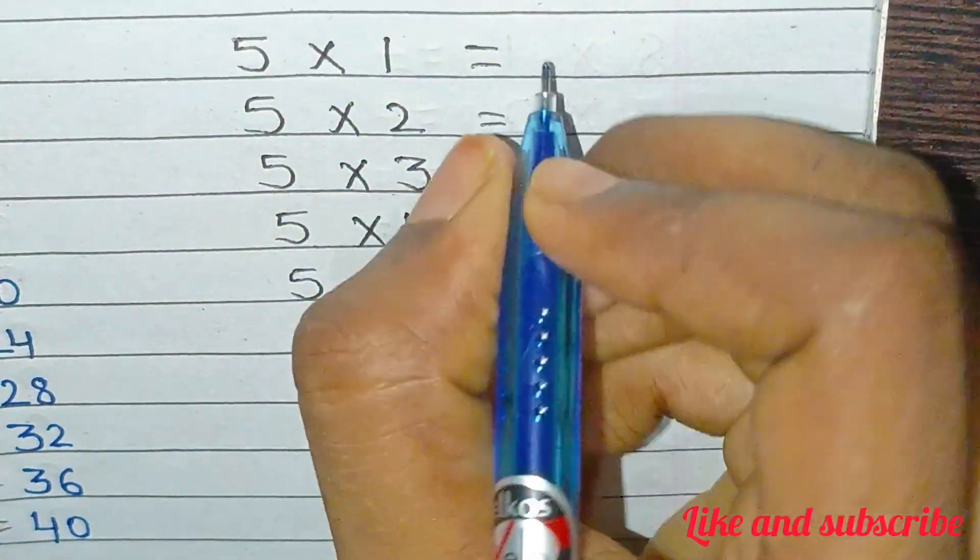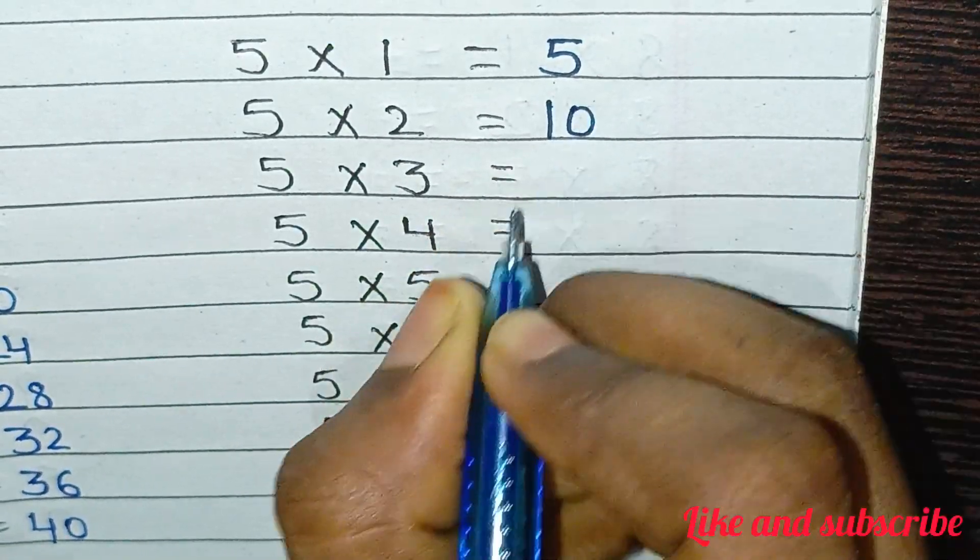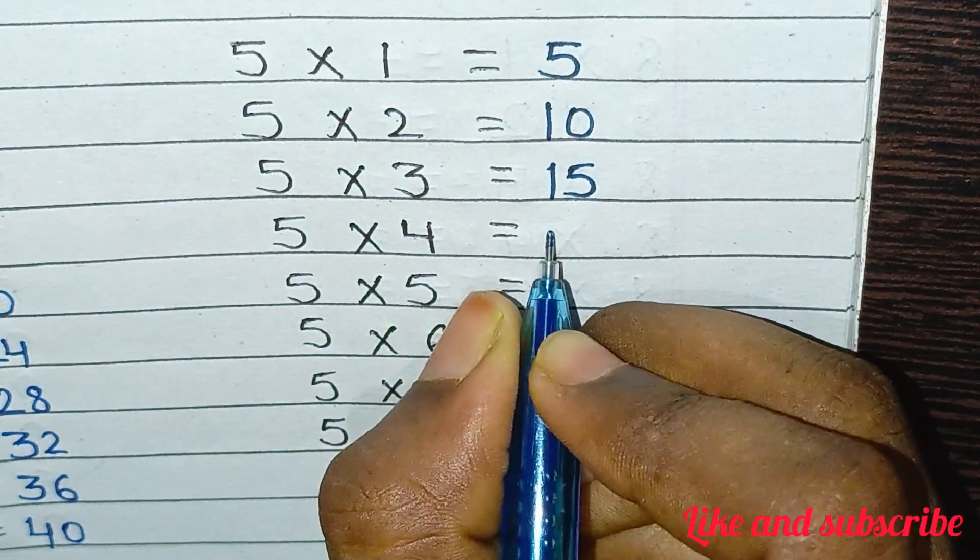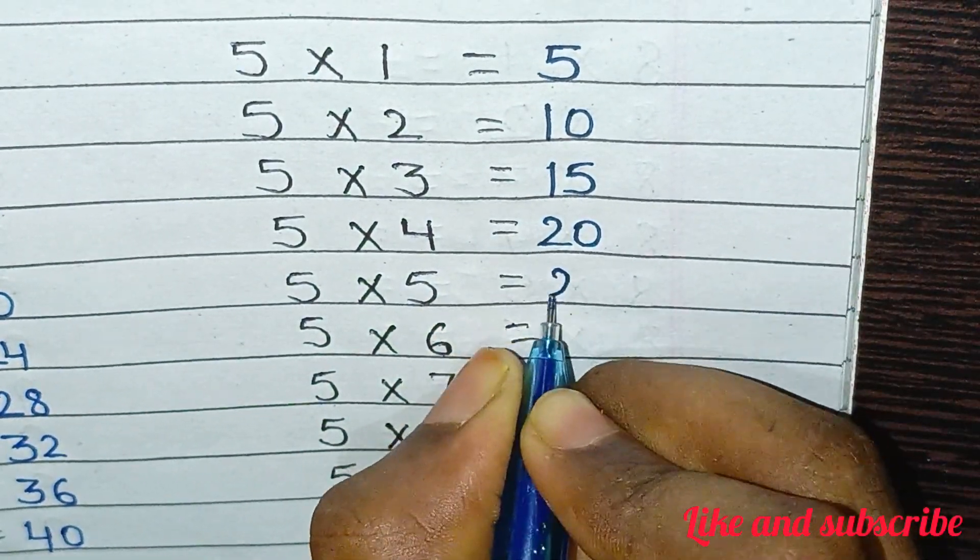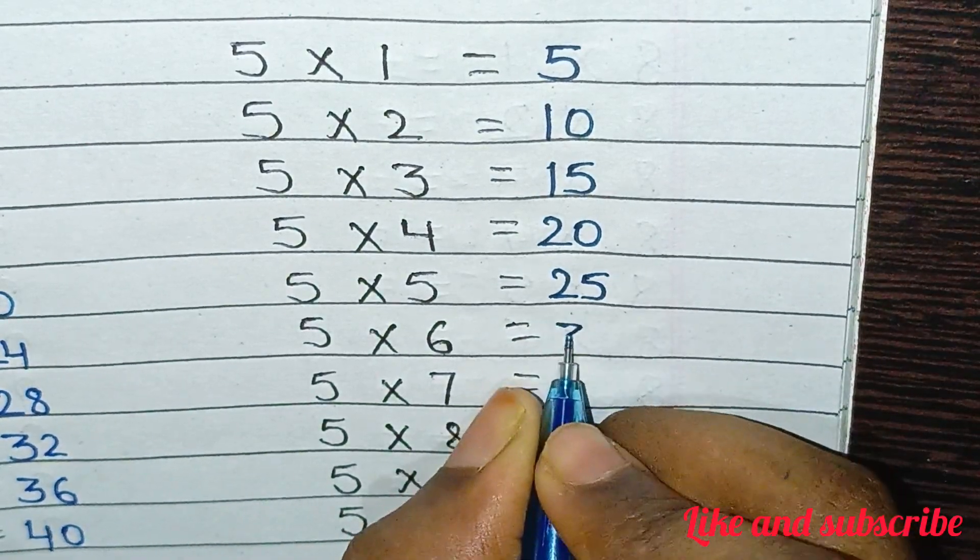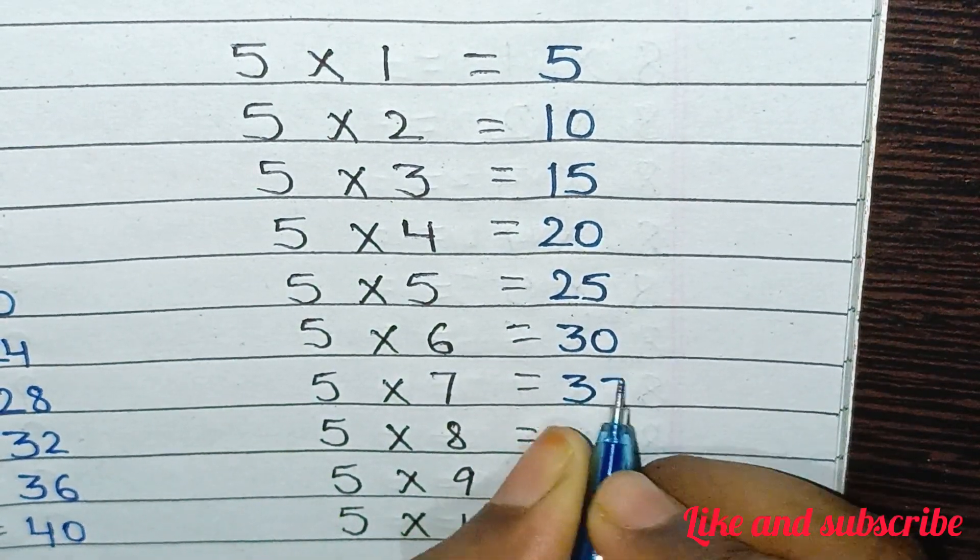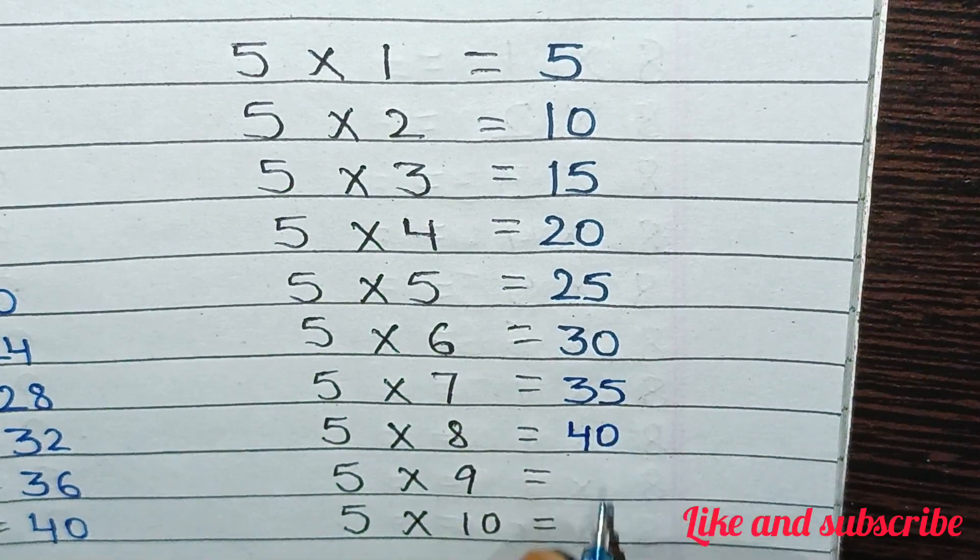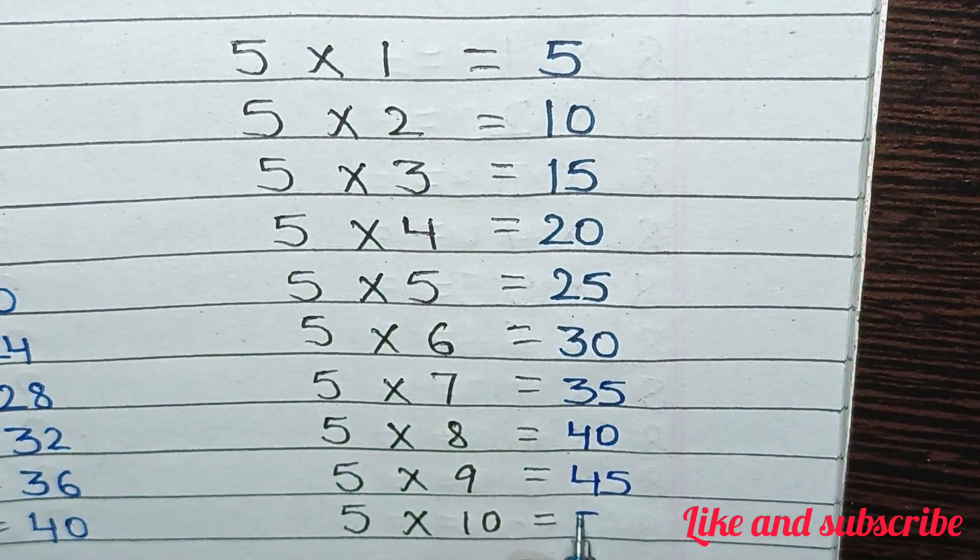5×1=5, 5×2=10, 5×3=15, 5×4=20, 5×5=25, 5×6=30, 5×7=35, 5×8=40, 5×9=45, 5×10=50.